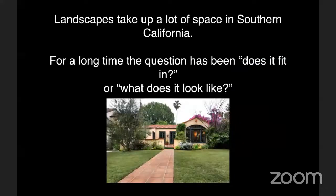We're going to start with a premise: landscapes actually take up a lot of space in Southern California. We might have maybe too much asphalt and concrete, but if you look at most of California, it's different from New York City or downtown Los Angeles from an aerial photograph. There's actually quite a bit of green space, especially in our suburbs.